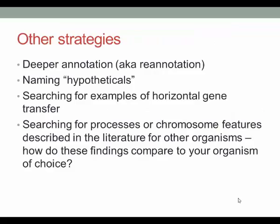Other strategies include deeper annotation, naming hypotheticals, searching for examples of horizontal gene transfer, and searching for processes or chromosome features described in the literature for other organisms. A myriad of approaches and questions can be asked in a gene annotation. There is great value in this task, especially if you move away from well-known model systems. Even today, a significant percentage of genes in most genomes are still called hypothetical or conserved hypothetical during automated annotation, and students can start to move some of these genes out of the hypothetical category into calls that impart much more meaning.